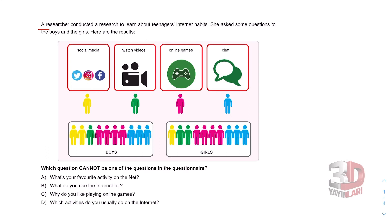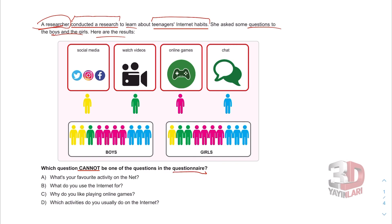Let's look at this next question. A researcher conducted a research to learn about teenagers' internet habits. She asked some questions to the boys and girls. Here are the results. Which question cannot be one of the questions in the questionnaire? They talk about social media, watch videos, online games, and chat.